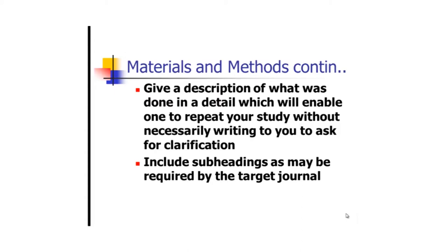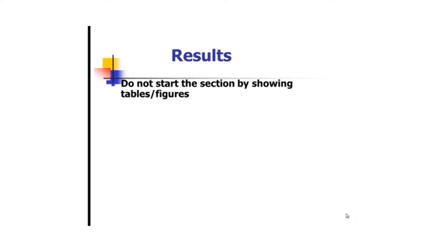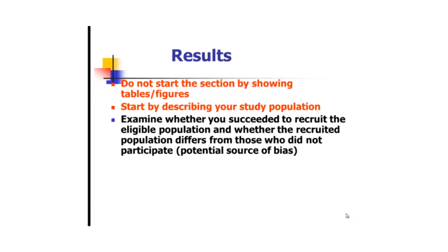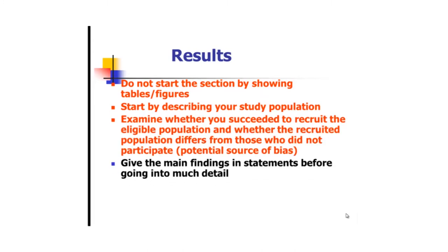What happens regarding results? Do not start the section by showing tables or figures. You must think things using text. The first paragraph has to be text. You start by describing your study population, whether there is anything weird that was encountered. Sometimes people talk about the response rate. The response rate is important because it helps readers judge whether the individuals you were supposed to recruit, you actually got them, and whether you encountered any problems and how these problems may have contributed to your findings. You continue by giving the main findings in statements before going into much detail. Then you give detailed analysis according to the objectives.